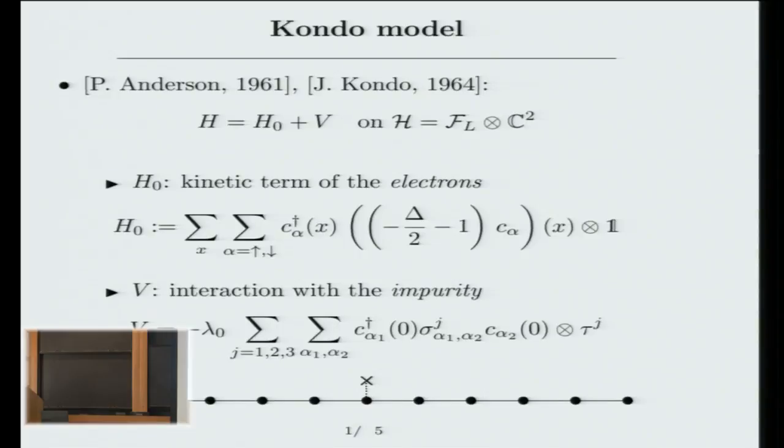It's defined formally over here. For those who know what all of these things are, this is a discrete Laplacian, an annihilation operator for an electron. If you don't know what these things are, you can simply think of this Hamiltonian as an operator that propagates electrons. It takes an electron on this side and throws it on this side or that side. Next, I have this V. This V is the interaction of the electrons with the impurity.